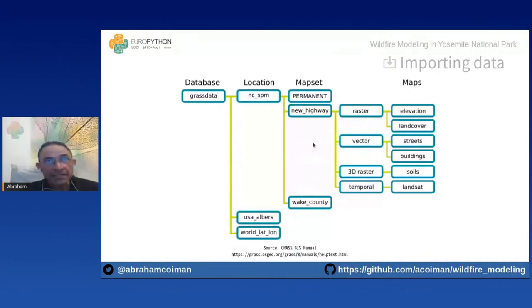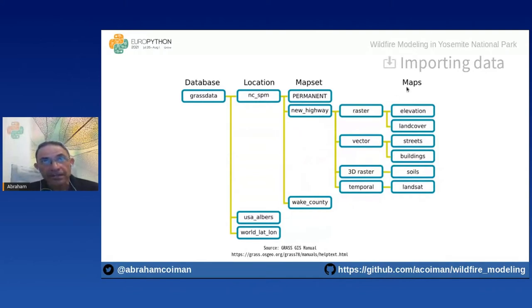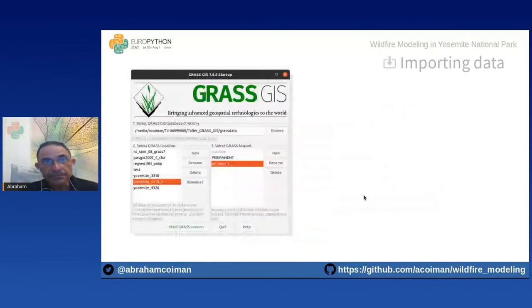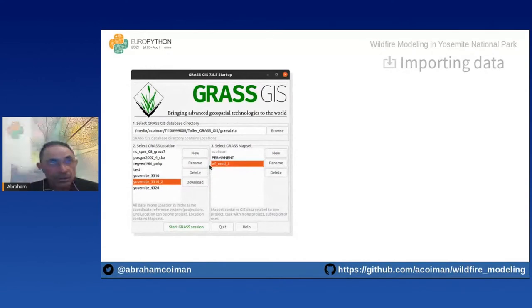Inside each mapset there are maps — think of maps as book sheets. For example, a database can have three locations; in the first location we may have three mapsets, and within a mapset there can be raster maps, vector maps, 3D maps, and temporal maps. We use the GRASS GIS graphical interface to create our location and mapset, as shown in the figure.